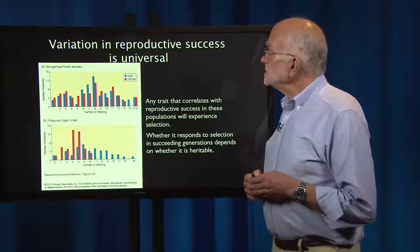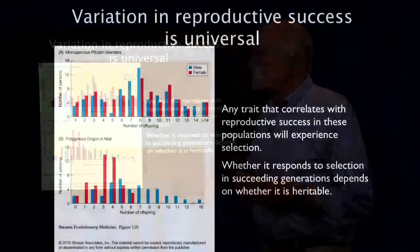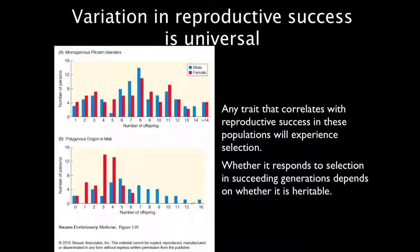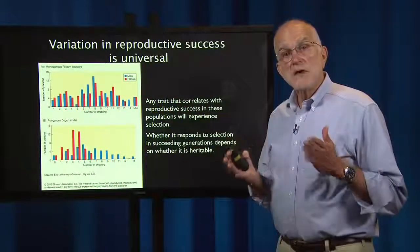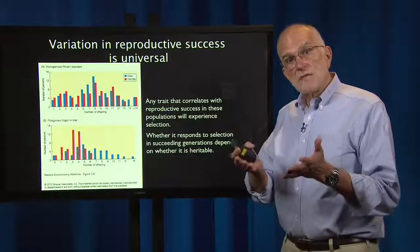Variation in reproductive success is universal. We have two examples here. On the top panel, we have the monogamous Pitcairn Islanders, and in the bottom panel, the polygynous Dogon in Mali. Males are in blue, females are in red. On the x-axis, we have the number of offspring that a particular individual had. On the y-axis, the number of people who had that number of offspring. You can see that in both populations there's great variation in reproductive success. Any trait that correlates with reproductive success in these populations will experience selection, and whether it responds to selection depends on whether it is heritable — on whether it's underpinned by genetic variation.